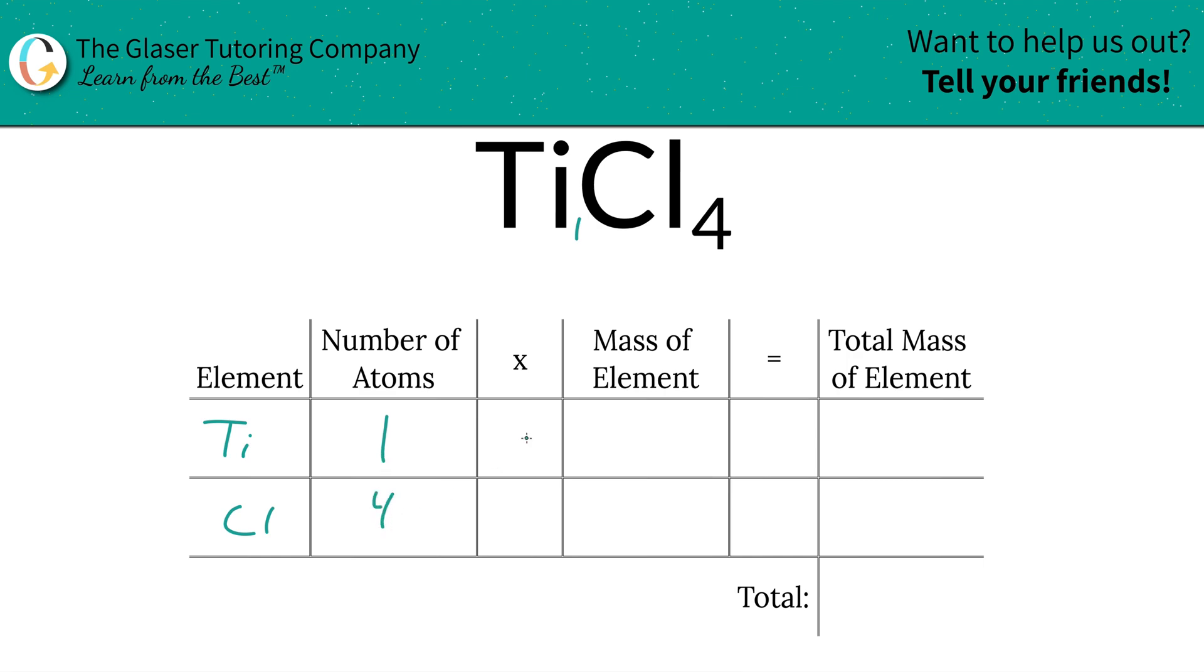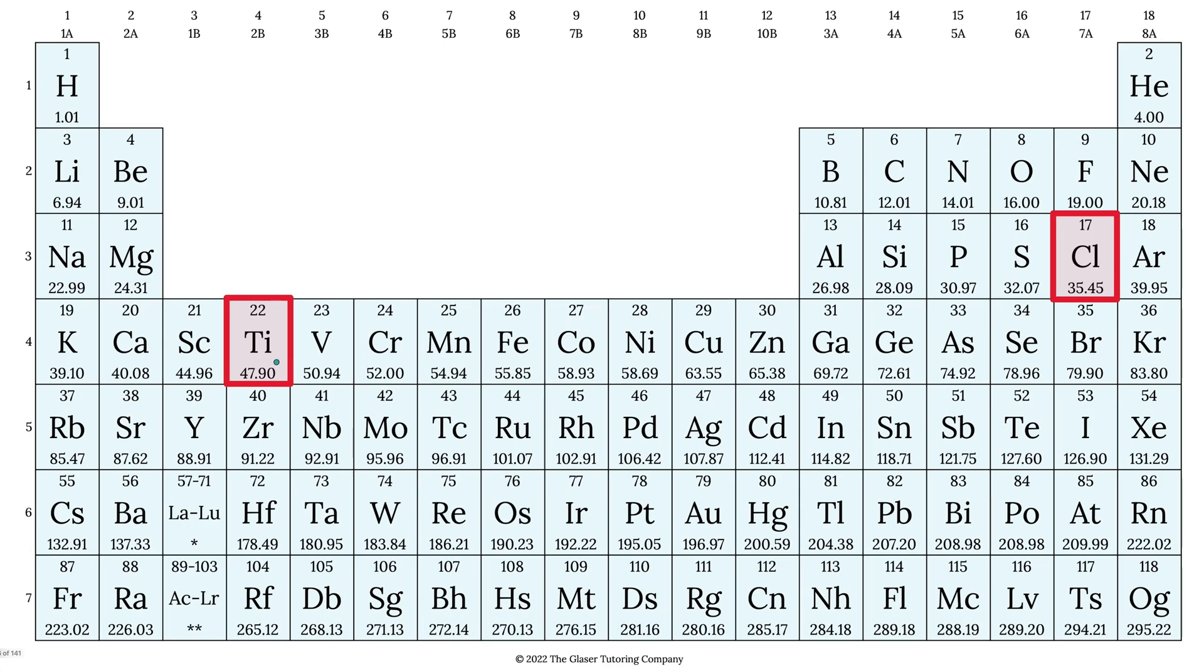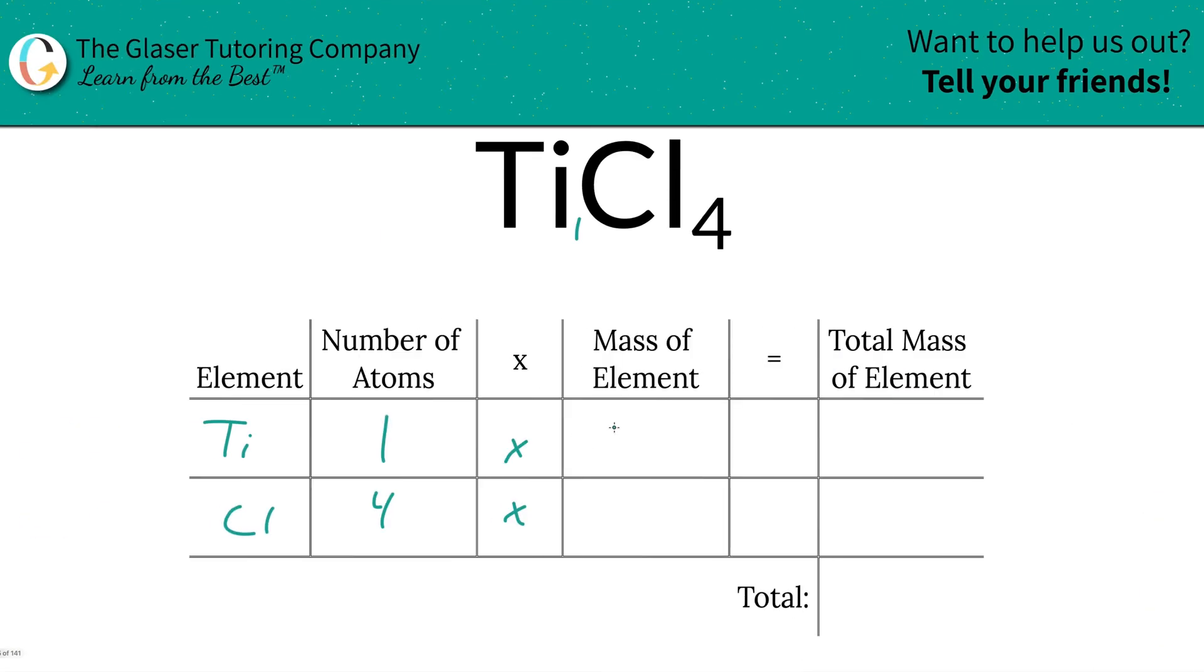Then we're simply going to multiply it by the mass of each element. Those masses are always found on the periodic table. Titanium is 47.90, chlorine is 35.45. So let's write that in. This is 47.90, this is 35.45.